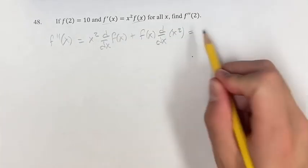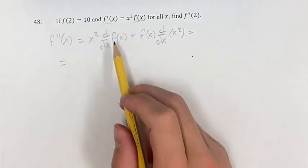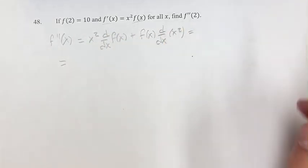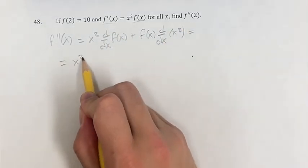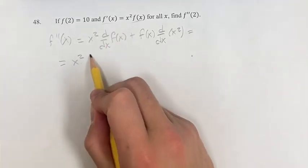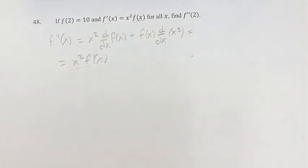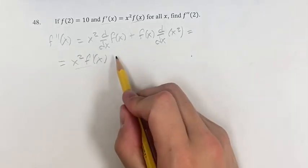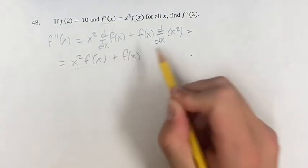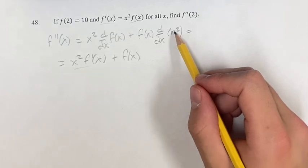So x² times the derivative of f, plus f times the derivative of x². This is going to be x² times f', and we don't have any way to simplify that just yet, plus f(x) times the derivative of x².